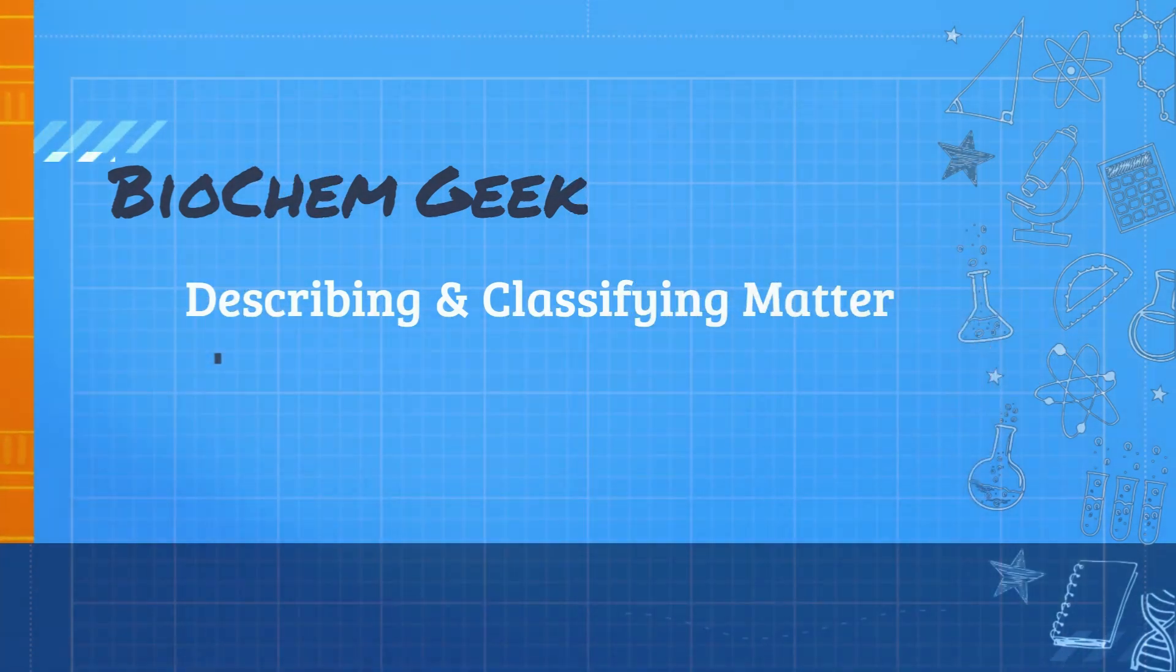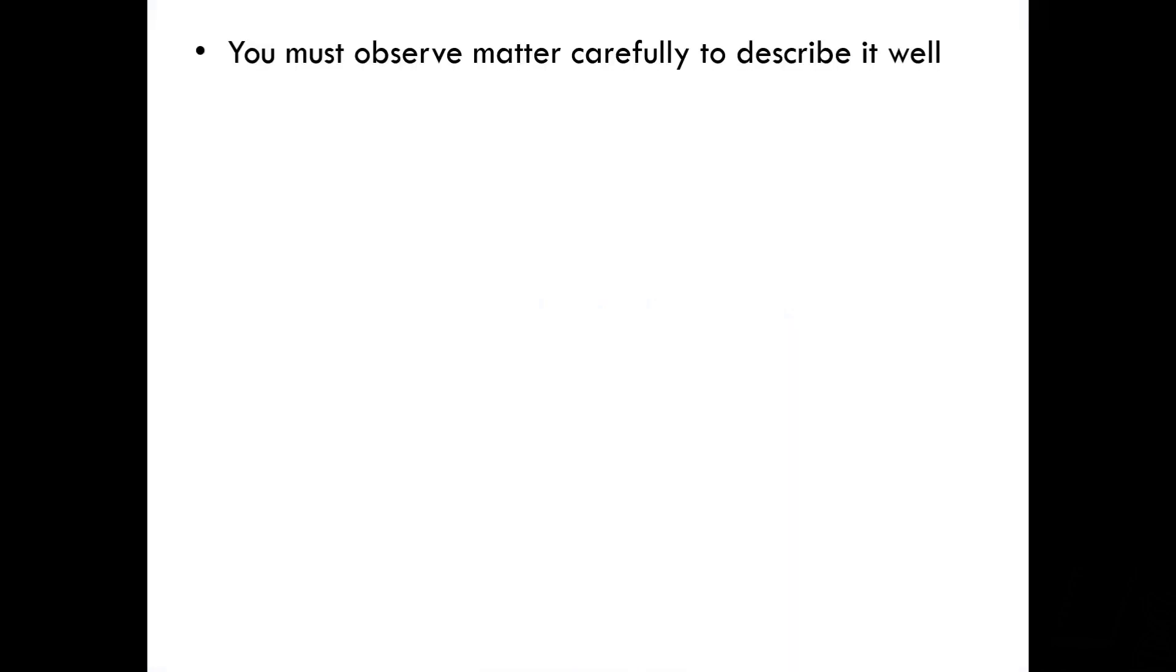Okay, let's get started. So, it goes without saying that you need to observe matter carefully to describe it well. The unique features or qualities of the matter you are observing are what serve to identify it for you. Characteristics that help you describe and identify matter are called properties.